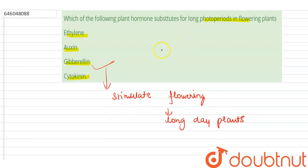Gibberellins can be used as a substitute for long photoperiods in flowering plants. In addition, gibberellin substitutes for the low temperature requirements.